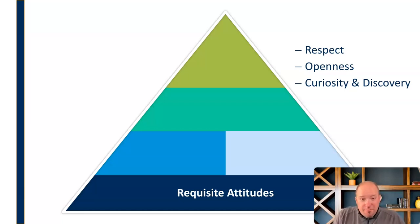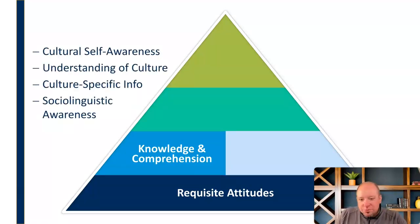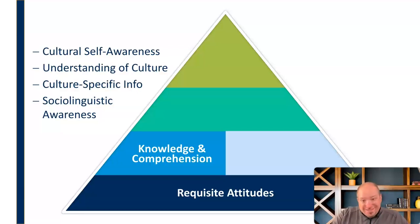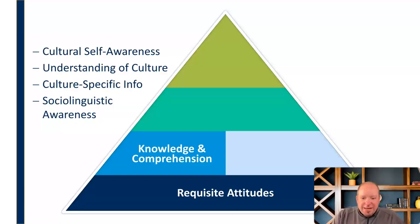The requisite attitudes are the base of that pyramid — the very foundational things we need. You have to have the right attitude going into this if you're going to improve your intercultural competency. Next, we need knowledge and comprehension. We talk about things like cultural self-awareness — we have to know who we are and how that may be different from others. We have to have an understanding of culture itself: what is culture, what is not culture, what is the definition of culture. Then we have to understand culture-specific information — information that is specific to that culture.